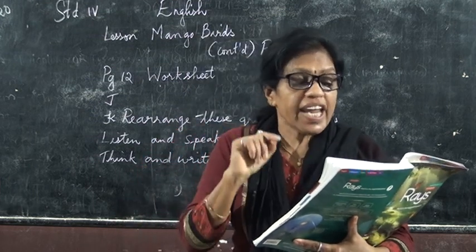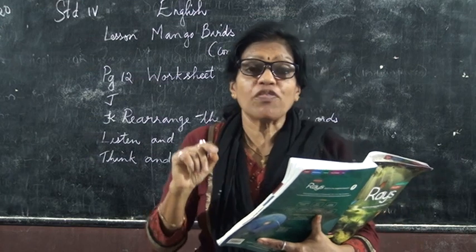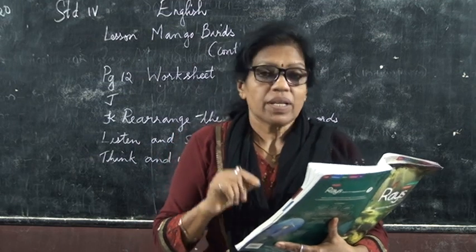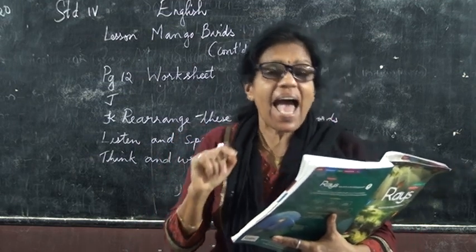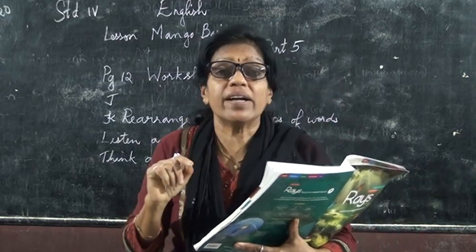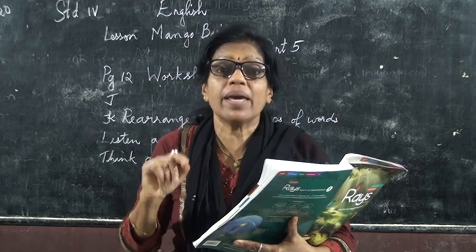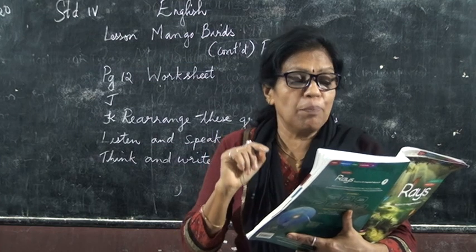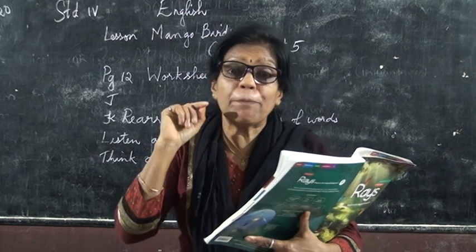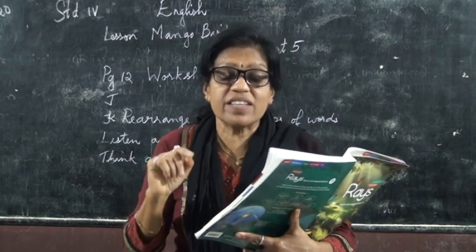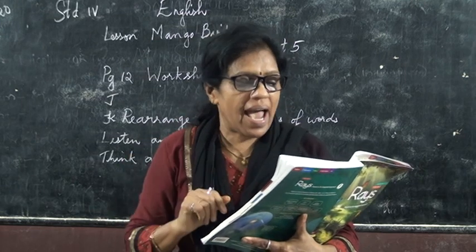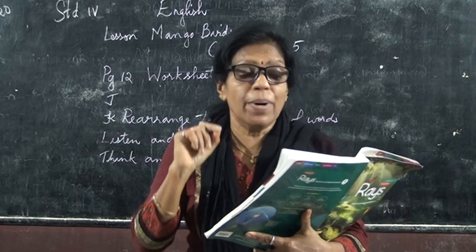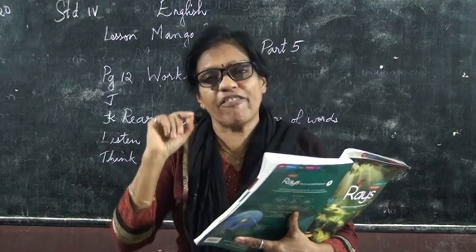Number five: In spring, a pair of bluebirds move into the bird house. Number six: He has a lot of fun watching the baby birds grow. Number seven: The book has beautiful pictures and is easy to read and understand. Number eight: It shows you that bird watching can be fun.